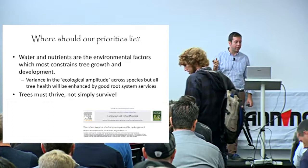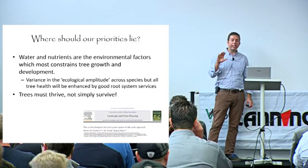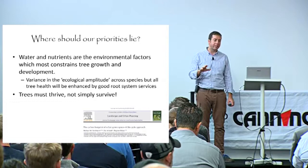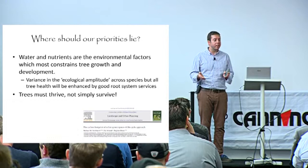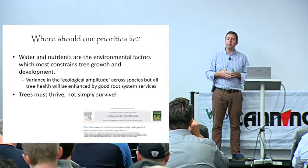Each species has a different what we call ecological amplitude. Some have got very good drought tolerance, some less so. Others have got good flood tolerance, salt tolerance, cold tolerance - all that sort of thing. Some trees will survive in really impoverished conditions; other trees will fail in those conditions. And we can learn a lot by just observing the ecology of trees, their natural history.